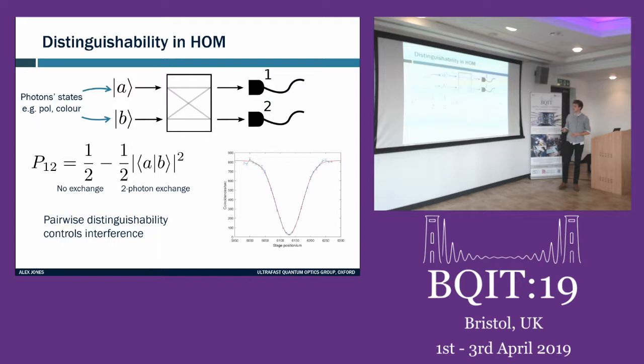The quantum interference term is a real number between zero and one — the overlap — which is zero when states are distinguishable and one when indistinguishable. This controls the strength of two-photon interference. Everyone knows the Hong-Ou-Mandel dip used to benchmark sources, where coincidences are suppressed when photons are indistinguishable, returning to classical probability when walked off temporally.